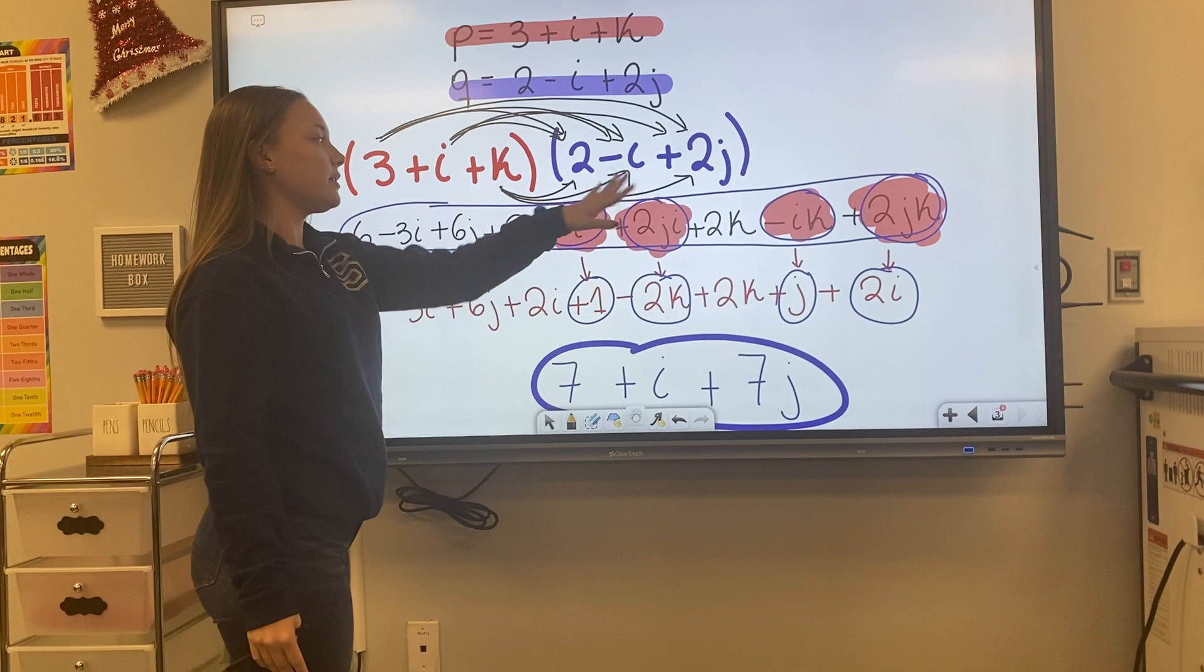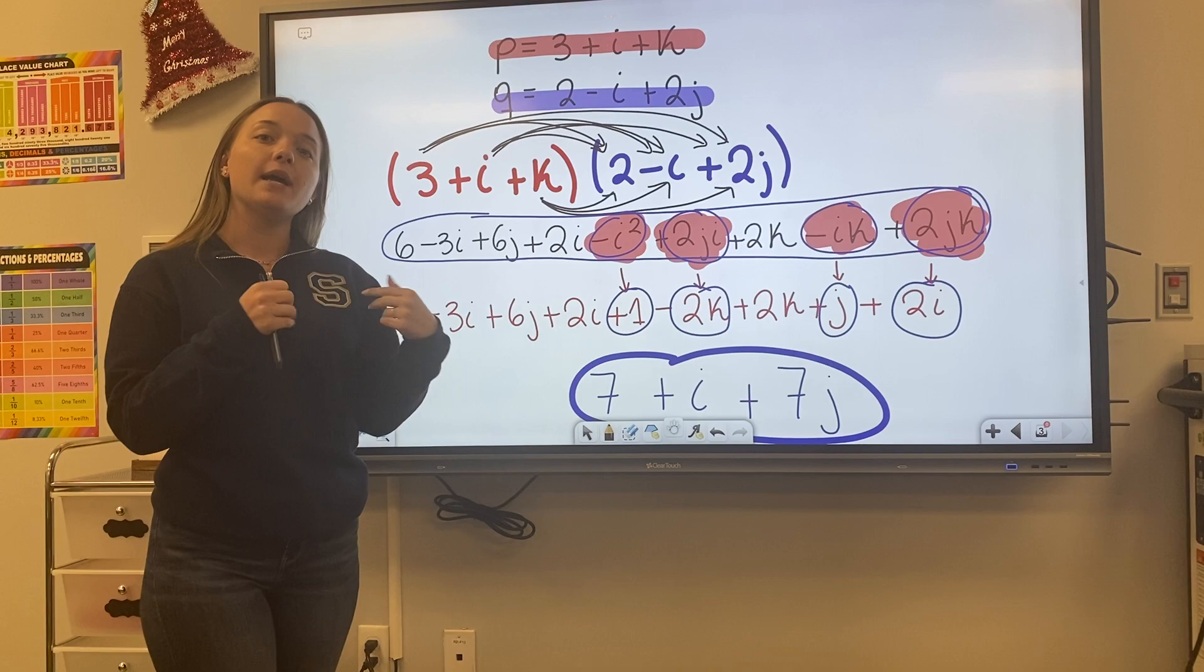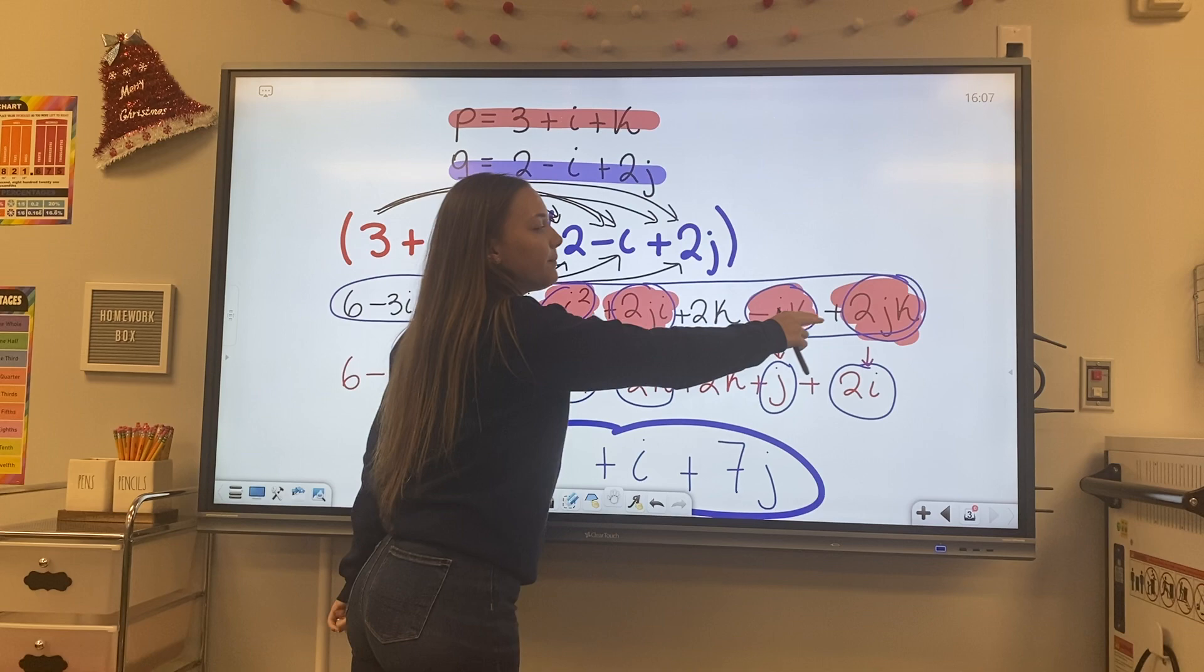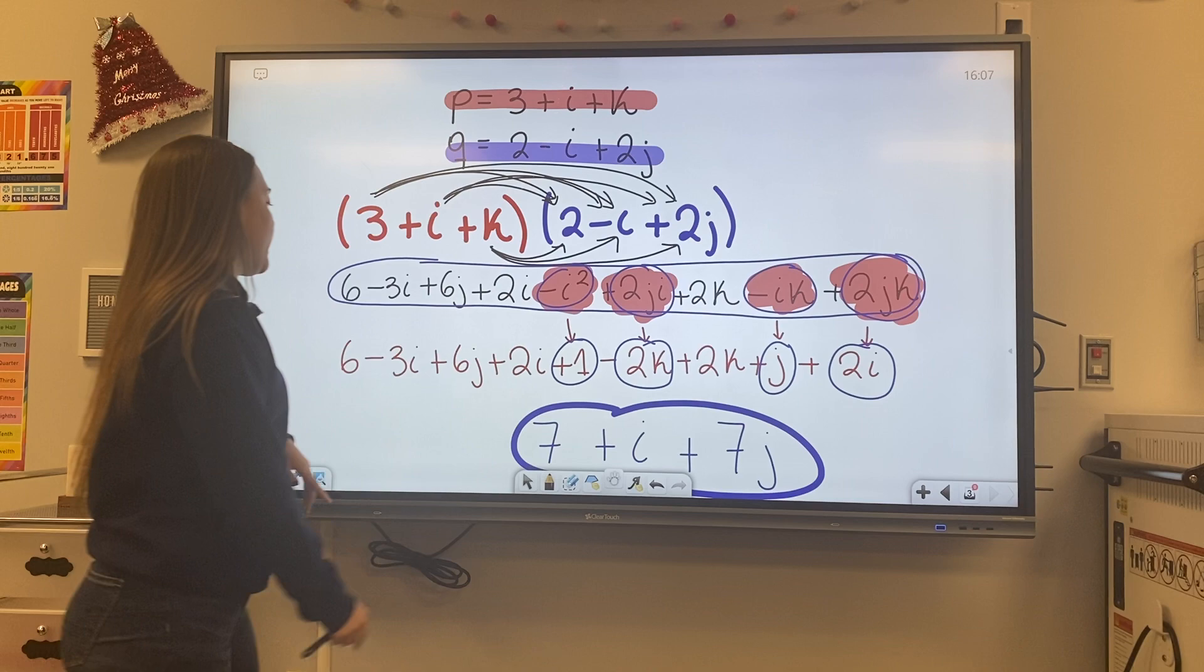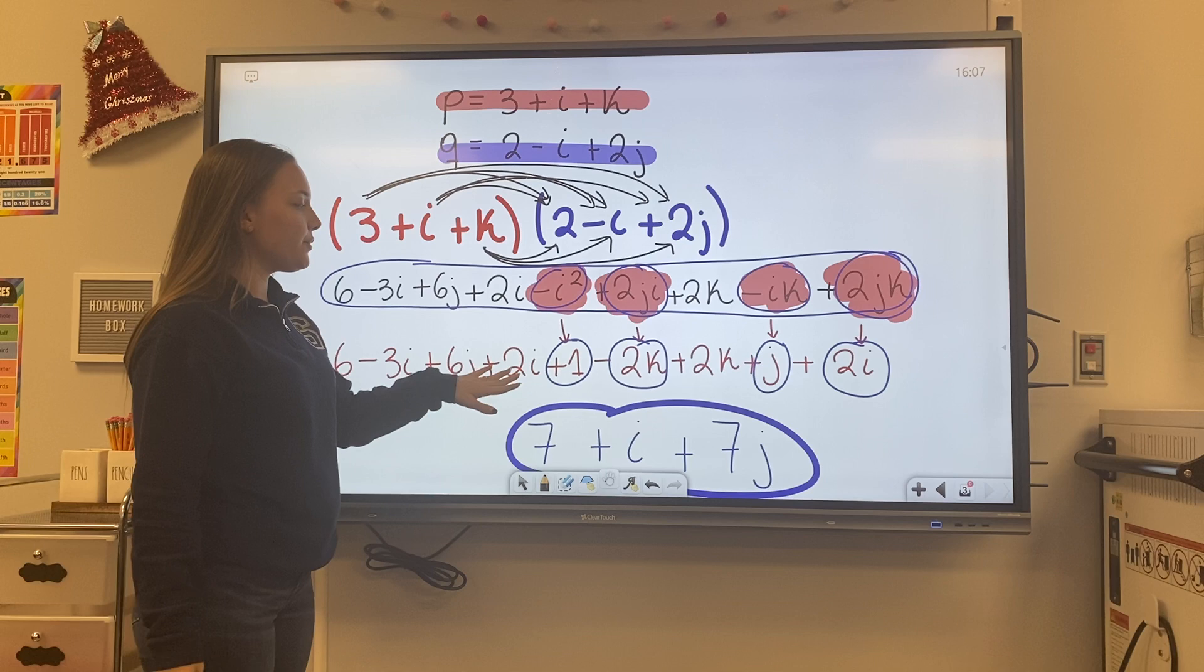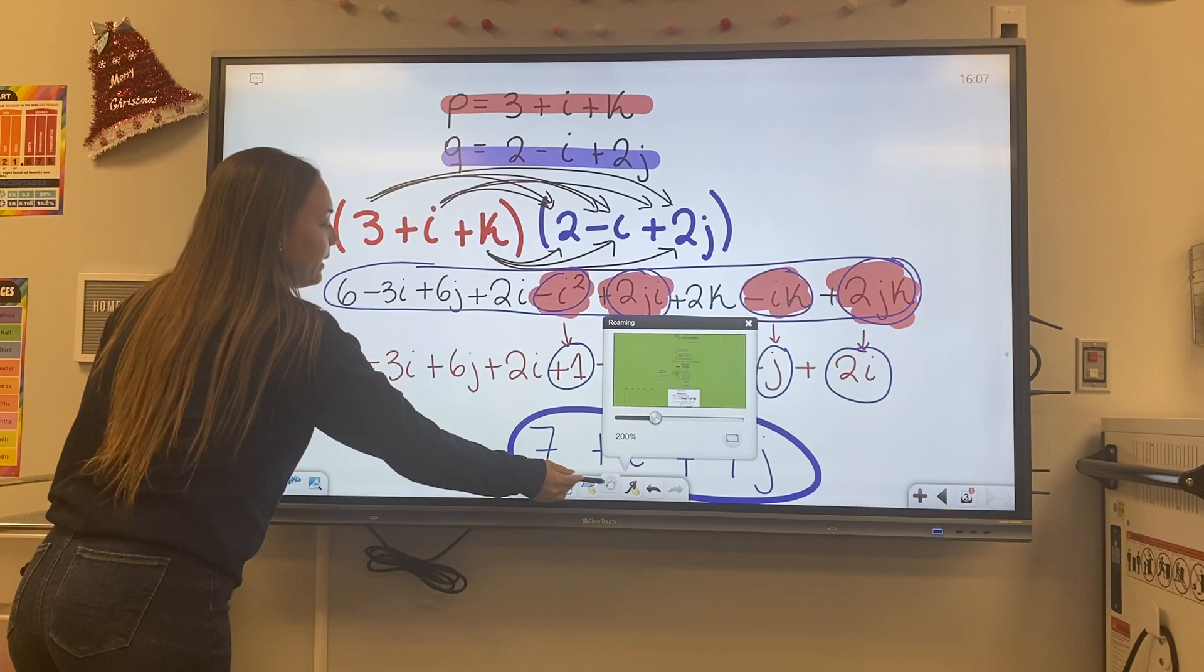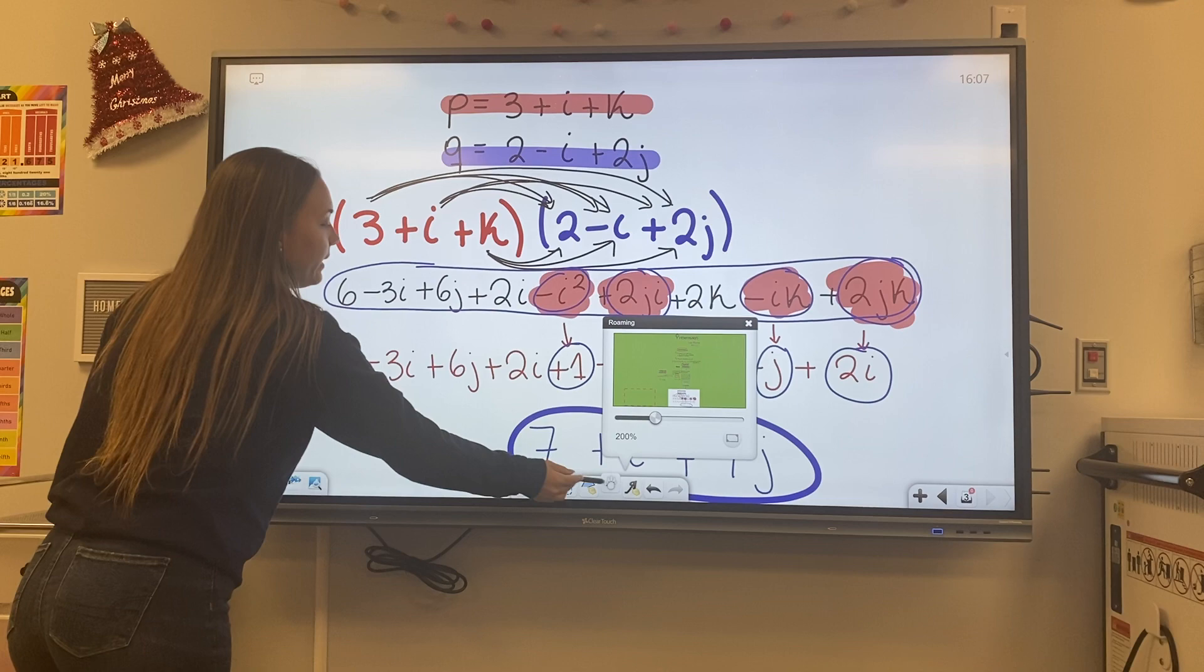So after we get our product we have to find those components that we are able to substitute by our conditions shown previously. So in this case they are negative i squared plus 2ji, negative ik and 2jk. So once we substitute those we're going to end up with 6 minus 3i plus 6j plus 2i plus 1 minus 2k plus 2k plus j plus 2i. So once we combine like terms this is the answer that we obtain.